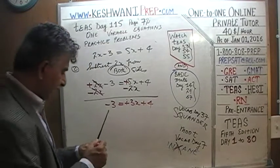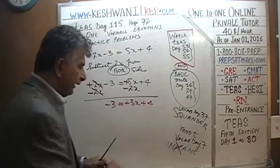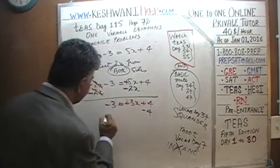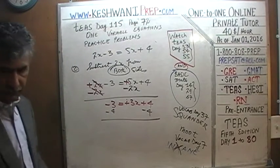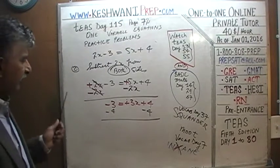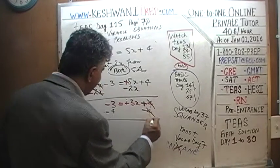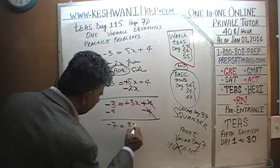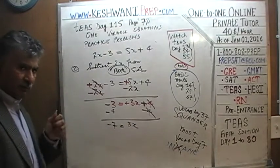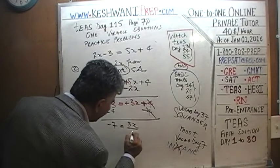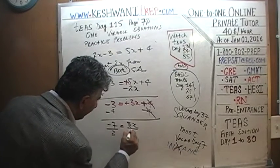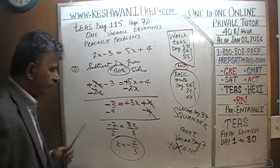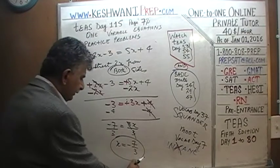The second step is to bring 4 to this side. Let's subtract 4 from both sides: the positive 4 and negative 4 cancel out, and negative 3 minus 4 gives us negative 7 equals 3x. We don't want the value of 3x — we want 1x by itself. Let's divide both sides by 3. This 3 cancels out, and we find that x equals negative 7 thirds.